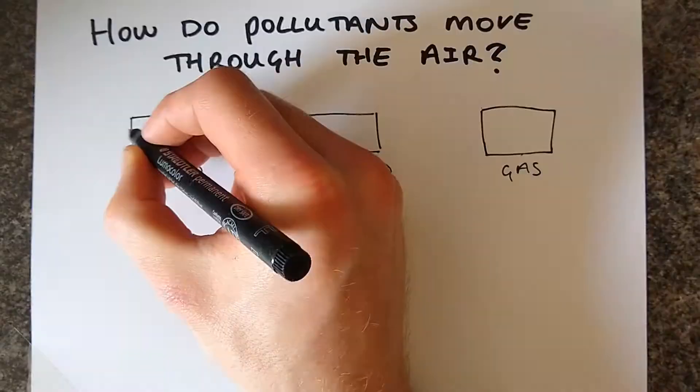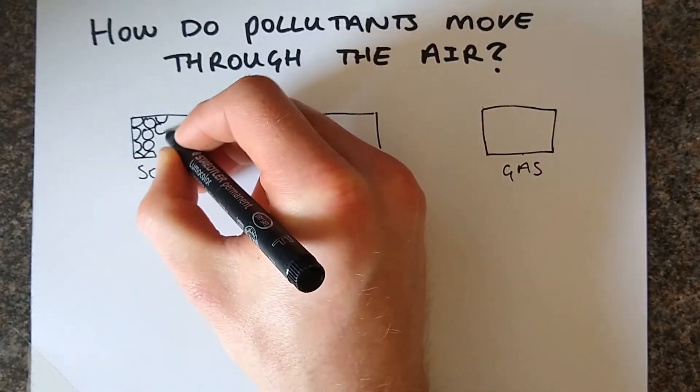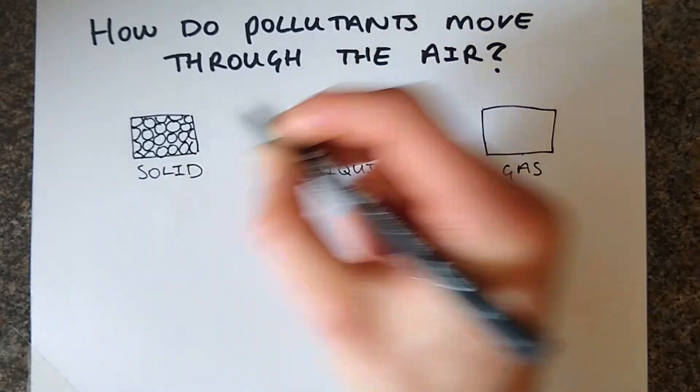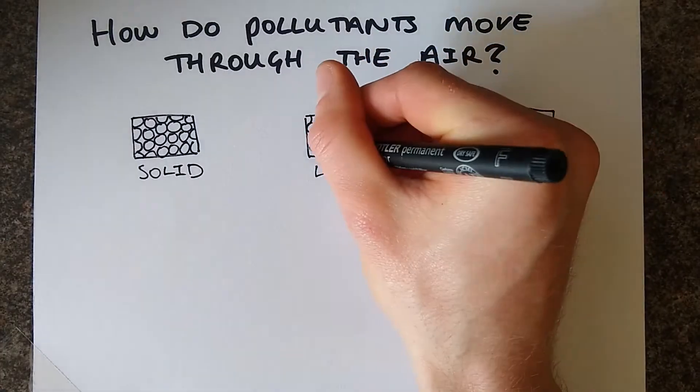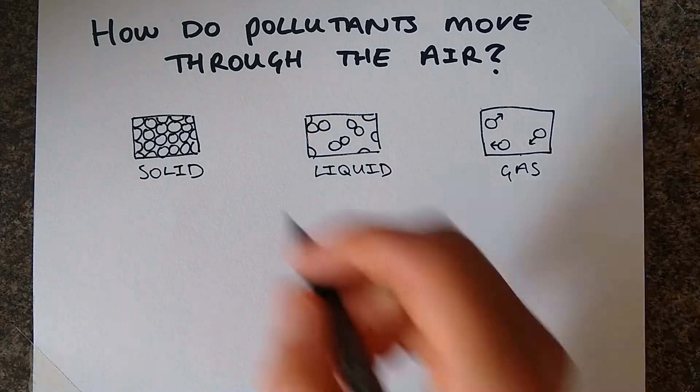Imagine the three states of matter as you've been probably taught them in school: solids, liquids, and gases. Solids are tightly packed with no spaces between molecules. Liquids are more loosely packed and are free to move around.